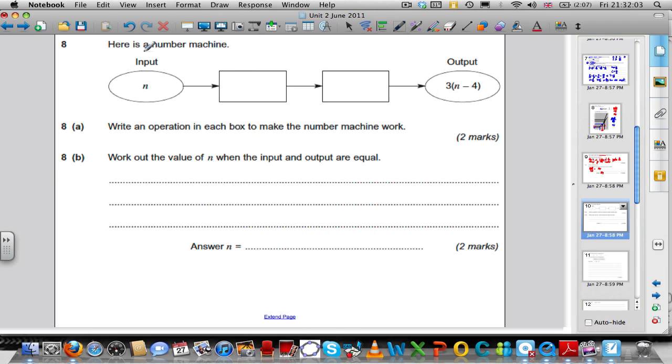Moving on to question 8. Very straightforward question here. Here is an input number machine. You input N, and you end up with that. What did you have to do to get there? Well, if you did N, if you subtracted 4, you would have got N minus 4, and then if you multiplied by 3, you would have got 3 times N minus 4, hence the answer.